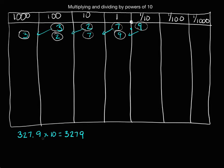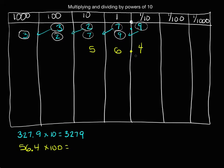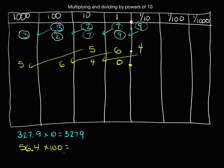Now let's multiply by 100. Let's try 56 and 4 tenths times 100. I'll put that into the place value chart. The place value chart is a great tool for understanding what's happening when we're multiplying by powers of 10. Now we're multiplying by 100, so we're going to move each of our digits two places to the left on the place value chart. I still have a decimal, so I have to put a zero placeholder in the ones place. So 56 and 4 tenths times 100 equals 5,640.